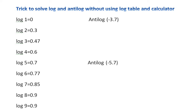In order to solve anti-log questions, you need to learn the log 1 to 10 values, and it is mandatory that you memorize those values. The values are: log 1 = 0, log 2 = 0.3, log 3 = 0.47, log 4 = 0.6, log 5 = 0.7, log 6 = 0.77, log 7 = 0.85, log 8 = 0.9, log 9 = 0.95, log 10 = 1.